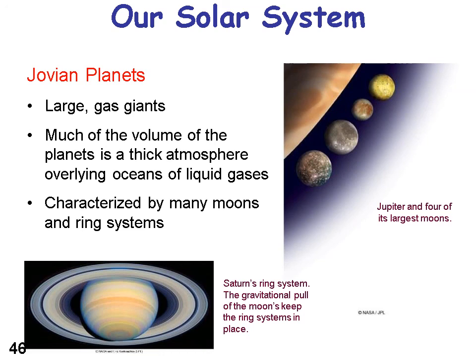Jupiter has four moons, and there are all kinds of science fiction stories about mining the moons of Jupiter. Saturn has a ring system, and the gravitational pull of its moons keeps the ring system in place.